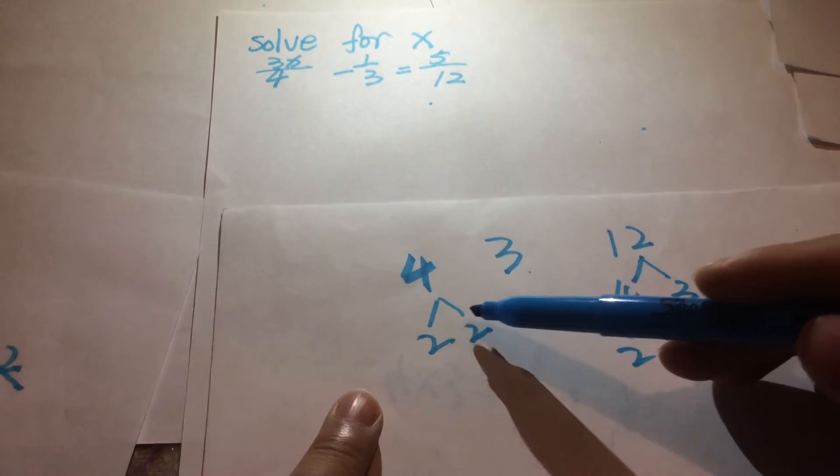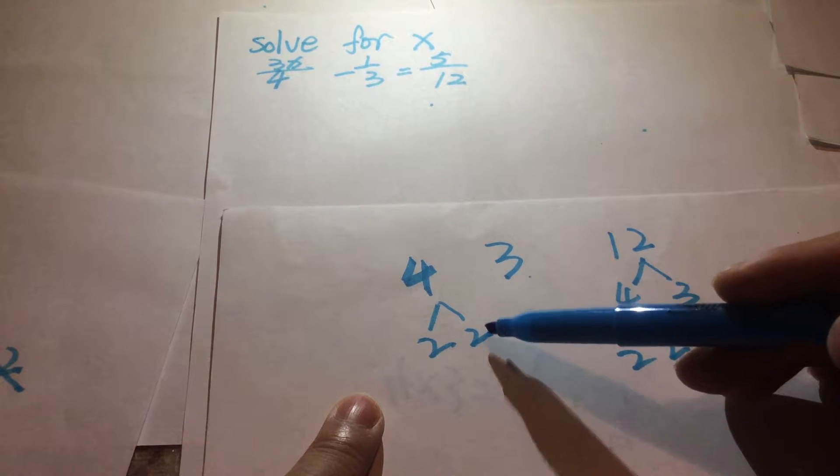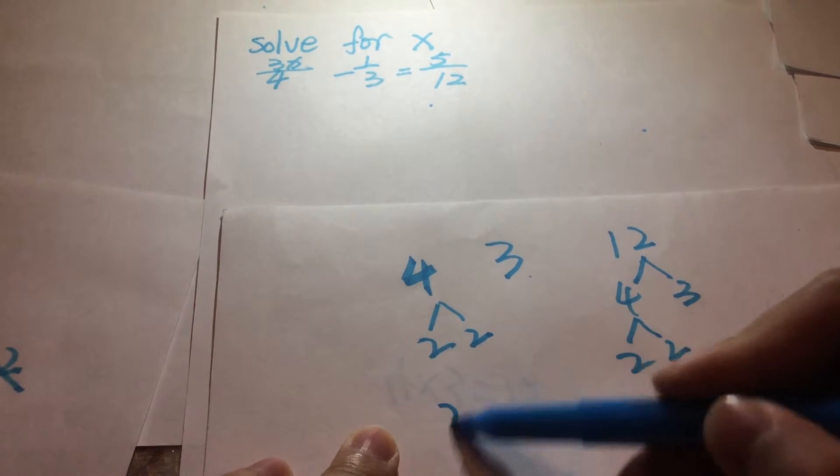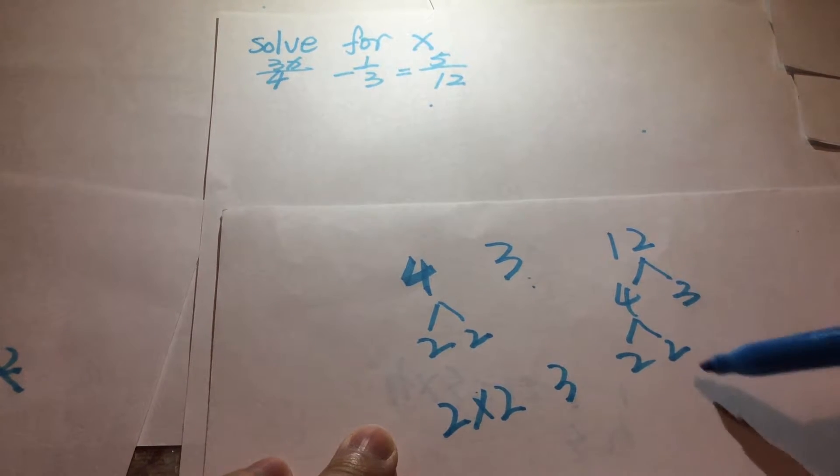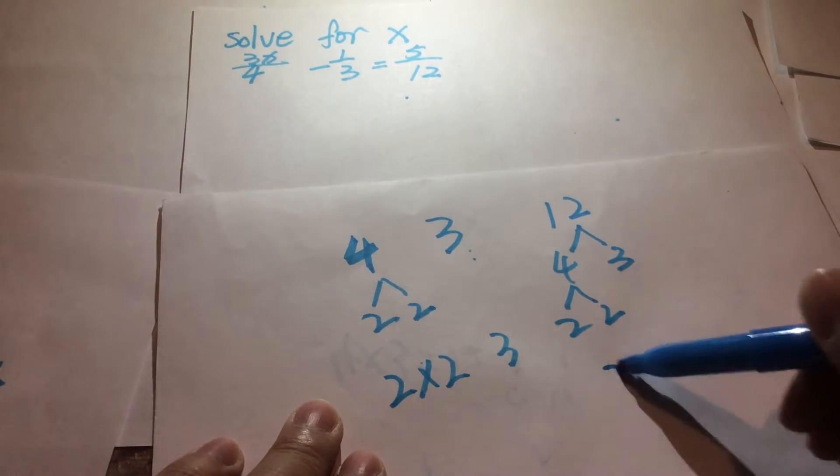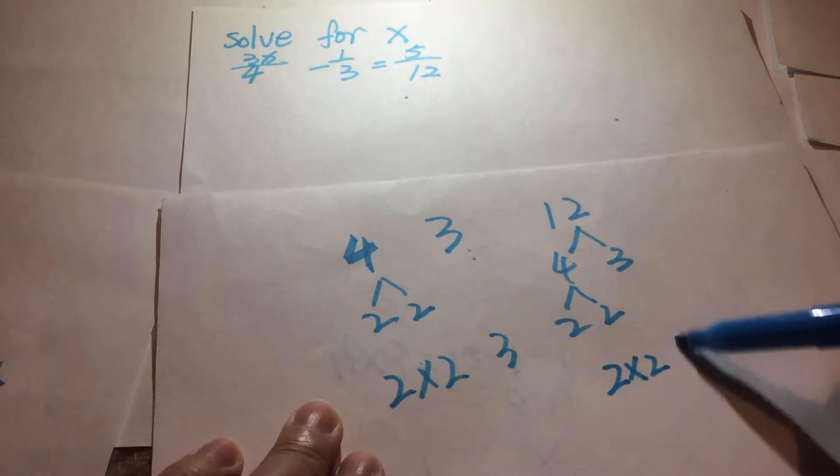So let's look at this. The first denominator can be divided by 2 and 2, so there are 2 times 2. Second one is 3. Third one, 12 can be divided by 2 and 2 and 3.